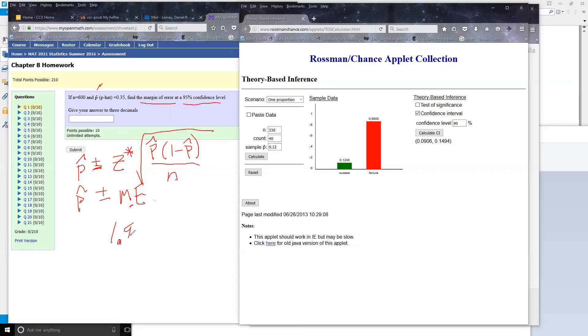This is a z-score, so we're going to use that, 1.96, almost two standard deviations times, let's see p-hat's 0.35.